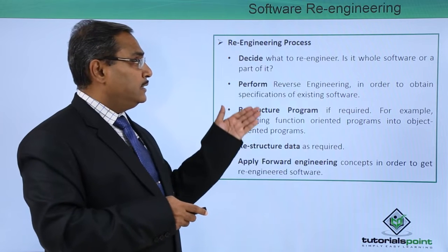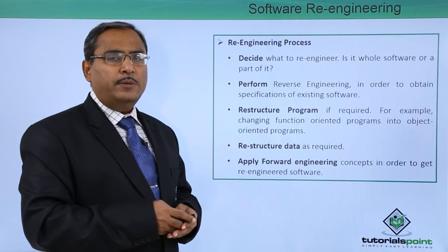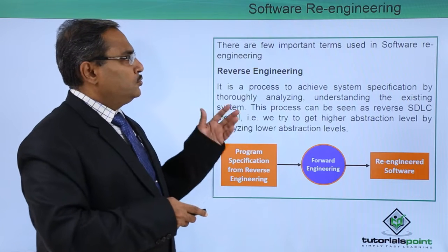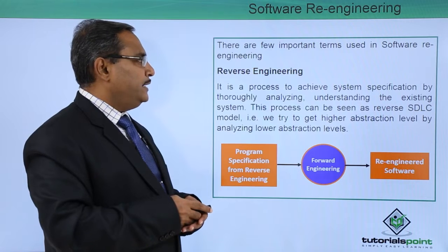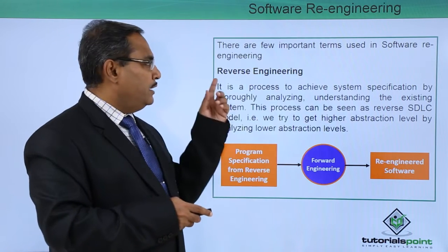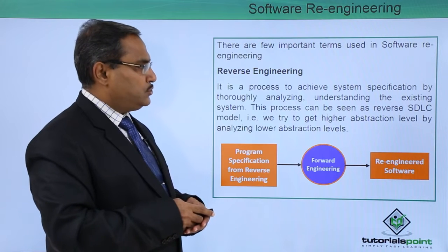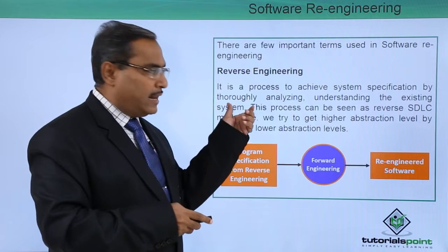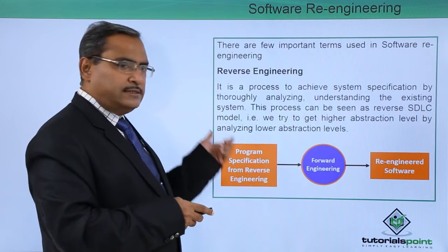In this way, these are the different processes taking place in re-engineering. There are a few important terms used in software re-engineering. The first is reverse engineering — it is a process to achieve system specification by thoroughly analyzing and understanding the existing system.